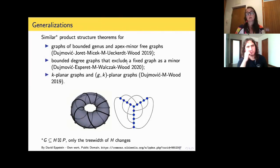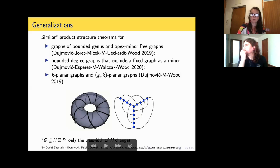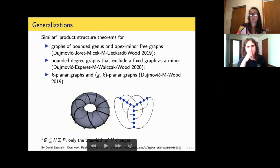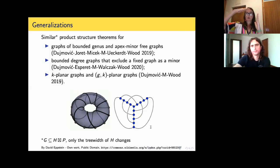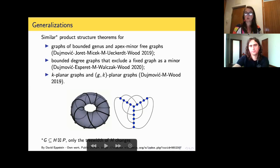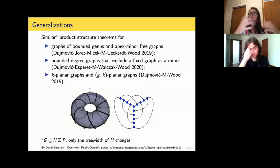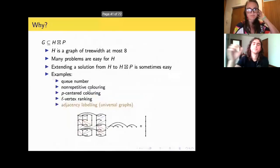It's not only constrained to minor closed families. We extended this result to some families that are not minor closed, including K-planar graphs. These are graphs that you can draw in the plane with at most K crossings per edge. This one here, for example, is a one-planar graph. They have a product structure theorem — meaning they are subgraphs of a strong product of a path and a graph whose treewidth depends on K. This generalizes to graphs of genus G drawn on a surface of genus G with at most K crossings.